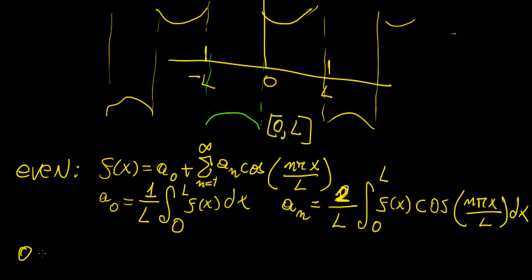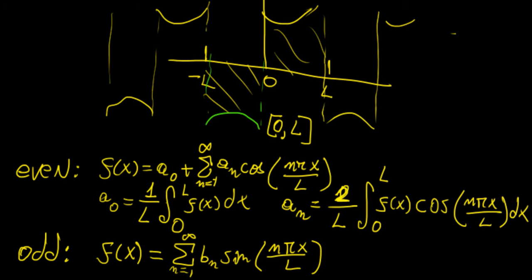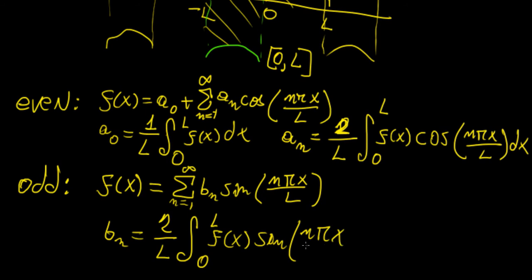For an odd function, we're going to have a Fourier sine series, because a₀ and aₙ are both going to be zero — the two areas cancel out. So we define this simply as the sum from n=1 to infinity of bₙ sine(nπx/L), and the Fourier coefficient bₙ equals 2/L times the integral from 0 to L of f(x) sine(nπx/L) dx.